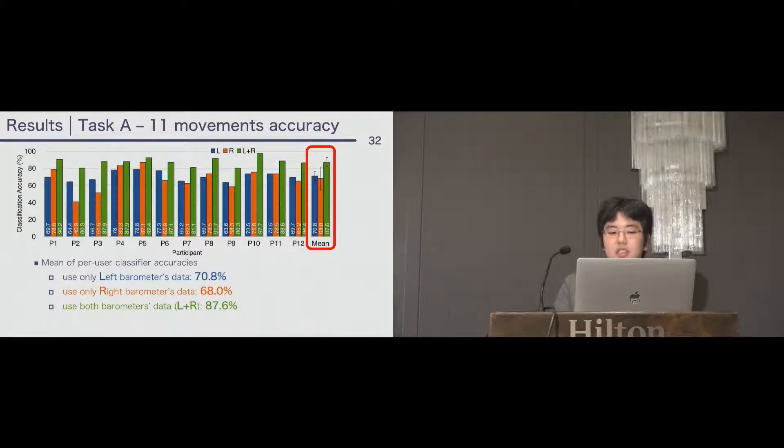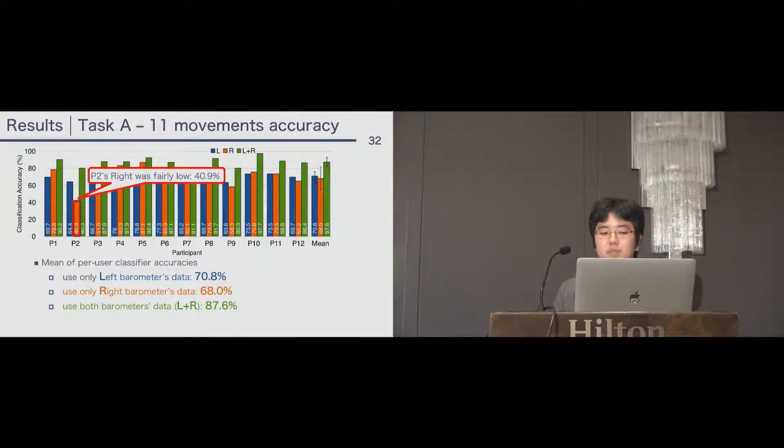From the results, P2's right accuracy was fairly low. In the post hoc questionnaire, P2 said his ear canals are so small that the earphones could not fit his ears, and it made keeping the air tightness hard. So, this is the possibility of the reason why P2's right was fairly low.